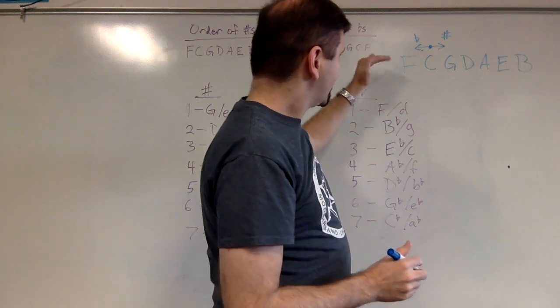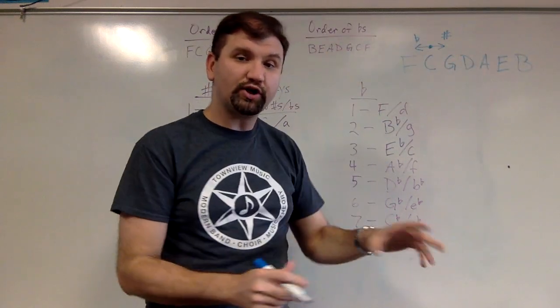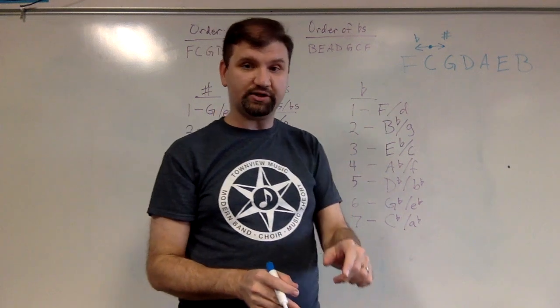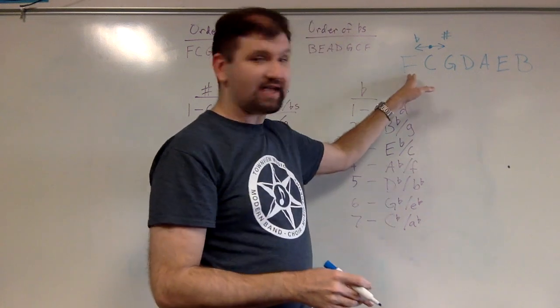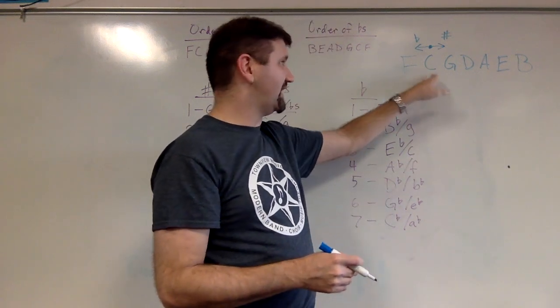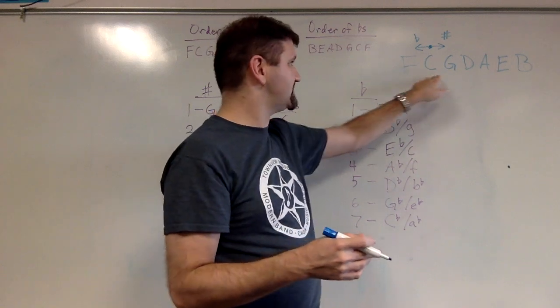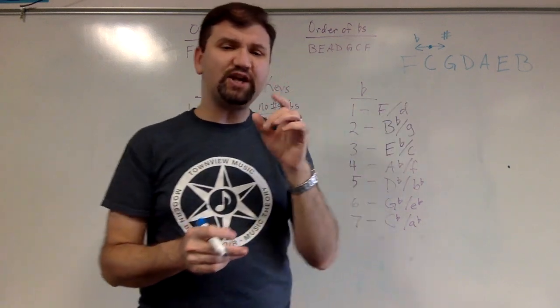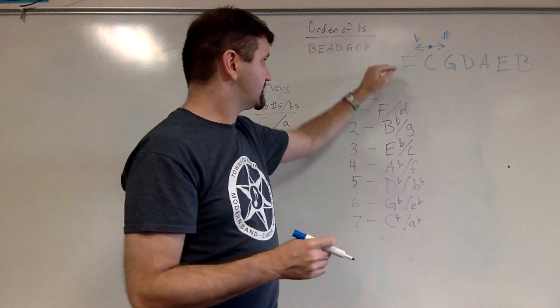So again, this is the order that sharps occur in the key signature. If there's one sharp, it's F. If there's two sharps, it's F and C. And if it's three sharps, it's F, C, G, and so on. That's the order of sharps starting on this end.